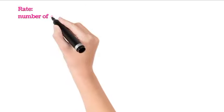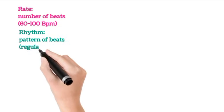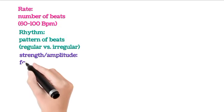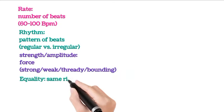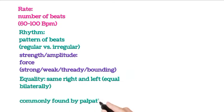Rate: Number of beats, 60 to 100 BPM. Rhythm: Pattern of beats, regular versus irregular. Strength/amplitude: Force - strong, weak, thready, bounding. Equality: Same right and left, equal bilaterally. Commonly found by palpating the radial or carotid artery.